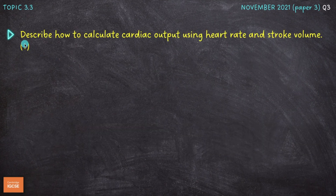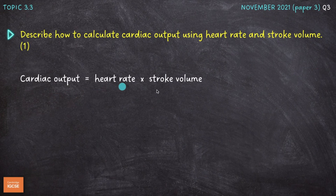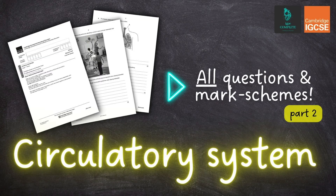Next question: describe how to calculate cardiac output using heart rate and stroke volume. We need to state the equation: cardiac output equals heart rate times stroke volume. That's enough for the mark. And that was it for this session on the circulatory system — 13 recent past exam questions attempted.